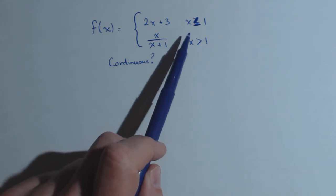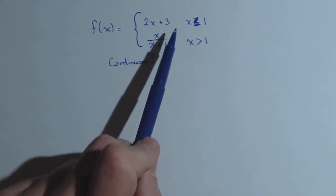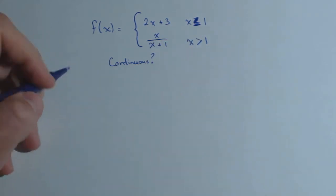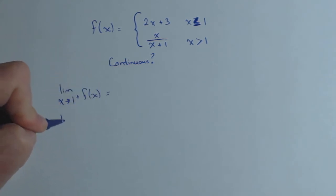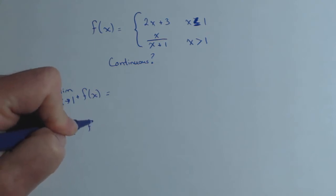So the only place that this may be discontinuous is at 1. What we're gonna do is check the one-sided limits: limit as x approaches 1 from the right of f of x, and limit as x approaches 1 from the left of f of x.